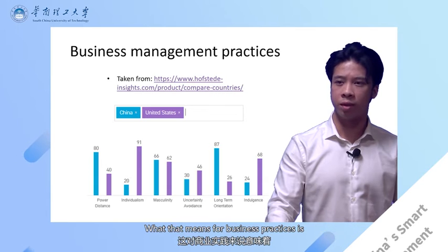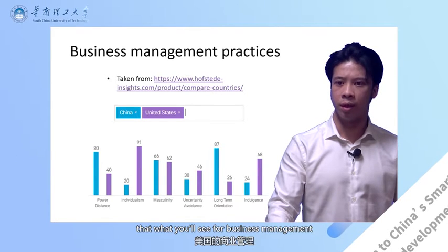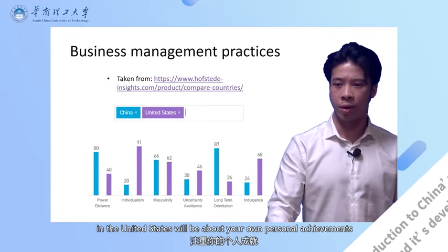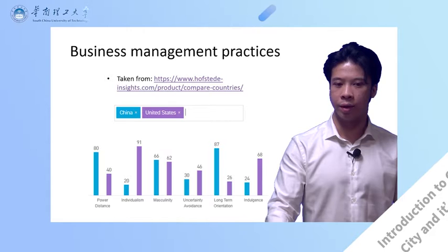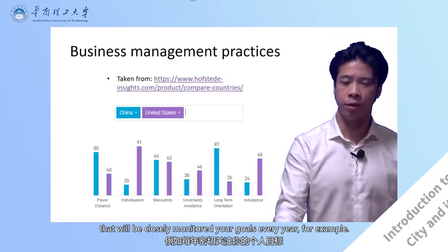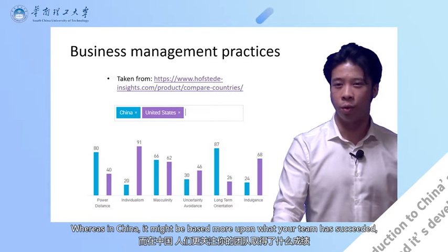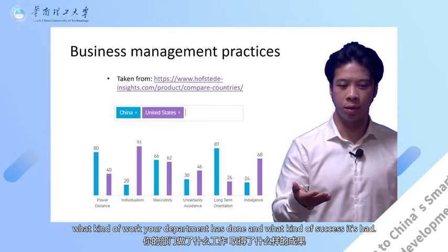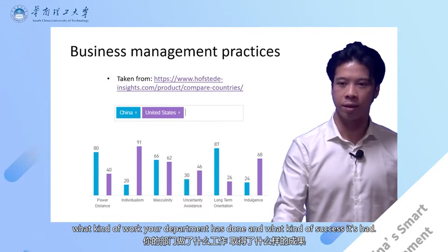What that means for business practices: for business management in the United States, a lot of it will be about your own personal achievements and that will be closely monitored — your goals every year, for example. Whereas in China, it might be based more upon what your team has succeeded, what your department has done, and what kind of success it's had.